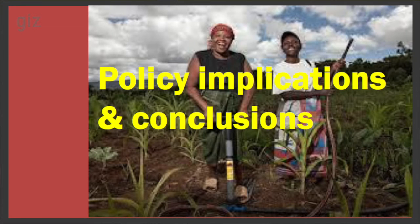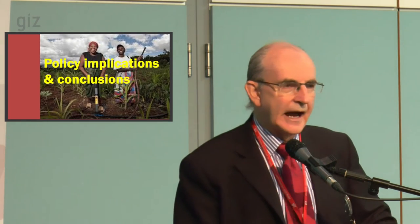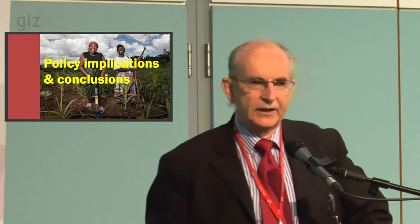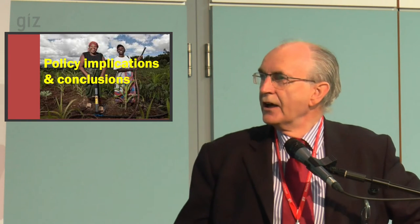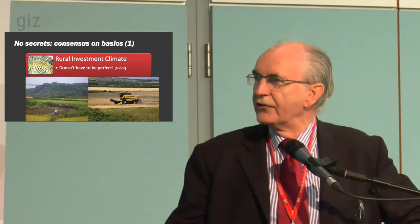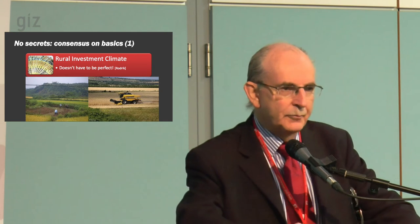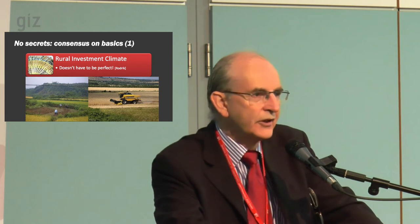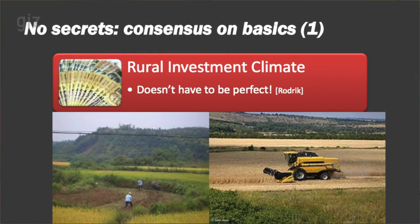There are no big secrets to agricultural growth. Indeed, agricultural growth tends to happen unless you actually stop it happening by unwise policies. There's a pretty big consensus on the basics. The rural investment climate — a stable macroeconomy, peace, basic economic institutions — is absolutely fundamental. It doesn't have to be perfect; it doesn't have to be World Bank circa-1990 perfect good governance. You just have to get rid of the big clunking problems.